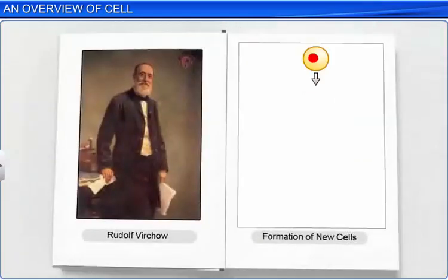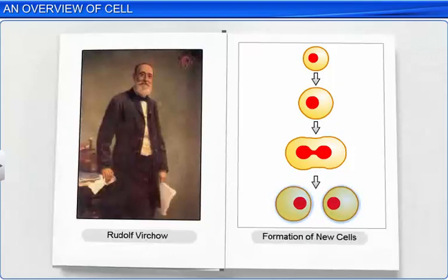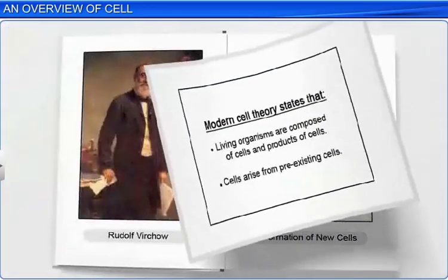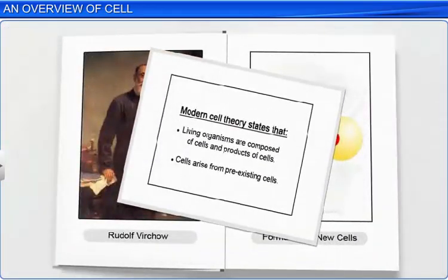He coined the Latin phrase 'Omnis Cellula E Cellula,' which meant that new cells arise from pre-existing cells, and accordingly modified the cell theory, which now states that all living organisms are composed of cells and products of cells, and these cells arise from pre-existing cells.